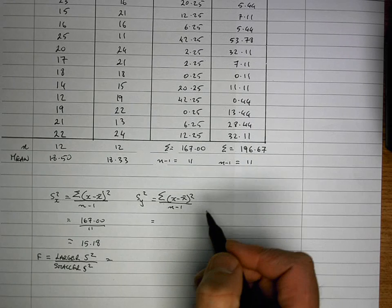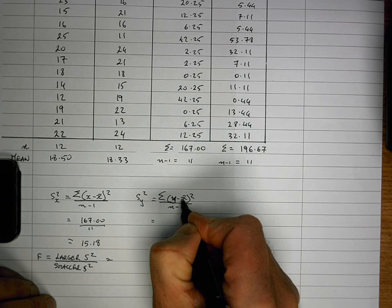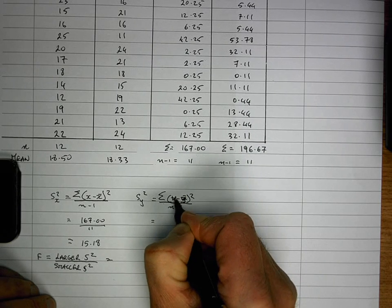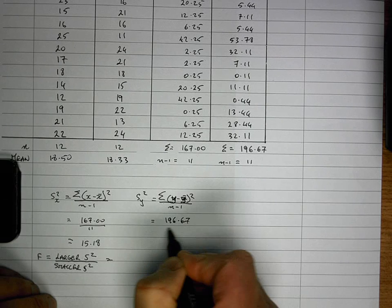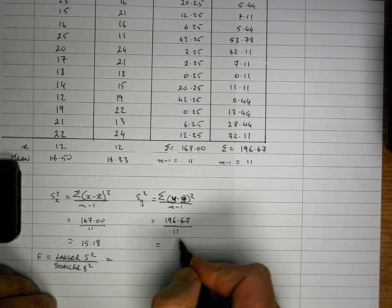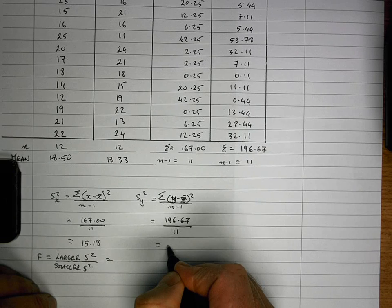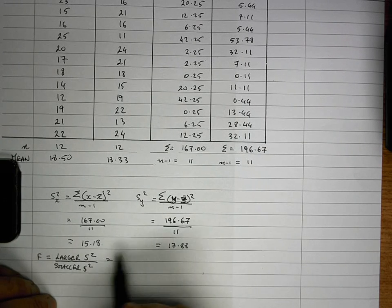And do the same thing then for the other group here. So I've got my y's in here. So I've got a value of 196.67 divided by 11. Which is equal to, I have that worked out here, 17.88. So I can see there's a slight difference between the two variances.